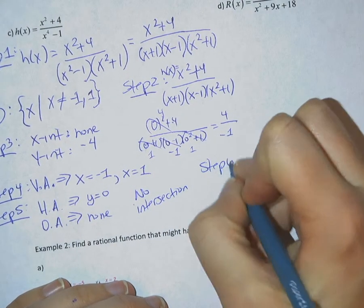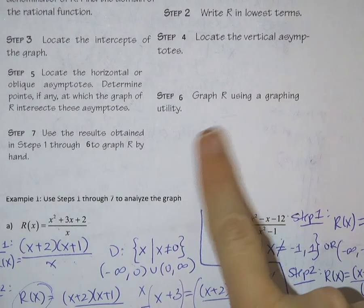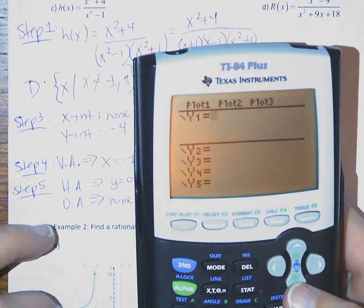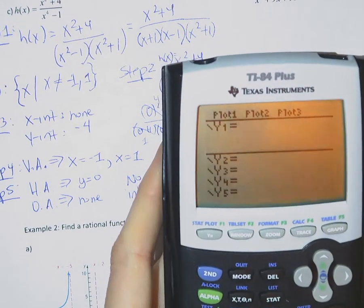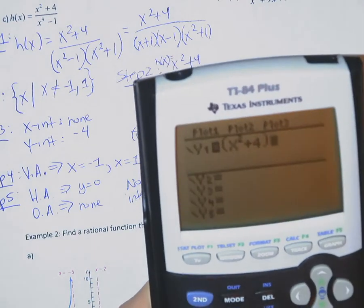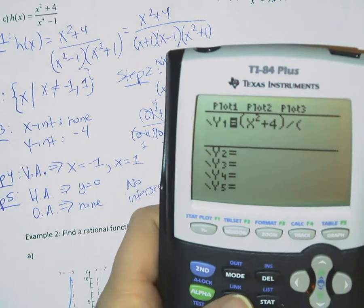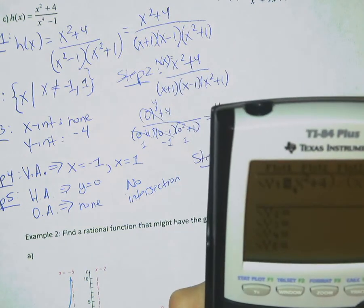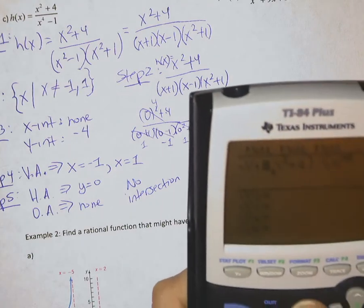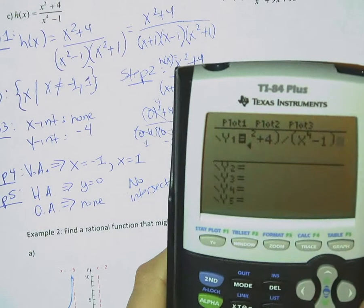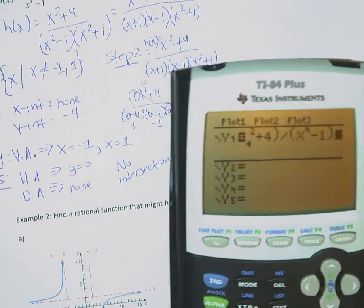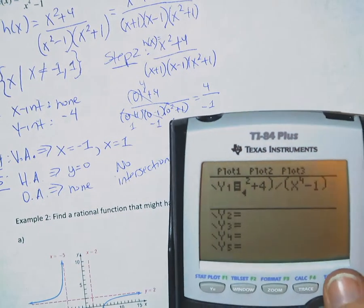Step 6. We are to graph it using our graphing utility. If we look back at our notes, graph the rational function using a graphing utility. So we're going to take out our graphing calculator and clear out any functions we have from earlier. We're going to graph our function. Remember, we're going to graph our original so that we can check our work. Don't graph any already factored functions, just in case you factored incorrectly. So we have x squared plus 4 divided by x to the 4th minus 1. Be very careful about your parentheses. Make sure you're using those appropriately and accurately so that you have exactly the function that you want to be plugging in. Very easy to make mistakes with those parentheses.